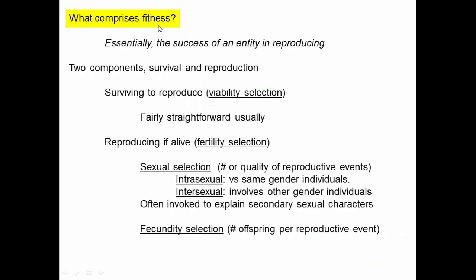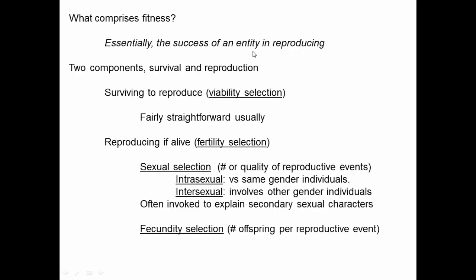In this part of the course, we'll think about fitness and what sorts of mutations might do to change the fitness of individuals that have these alleles. The definition of fitness we'll use is that it's essentially the success of an entity in reproducing. We can think about fitness of individuals, or we can also think about fitness of alleles as entities that reproduce. The success at reproducing actually has two components: survival and reproduction.